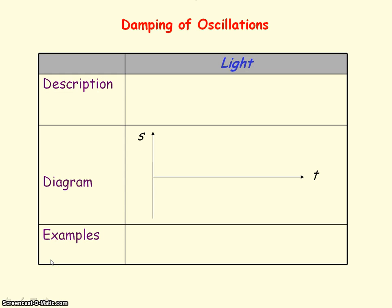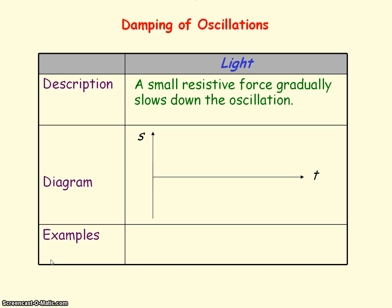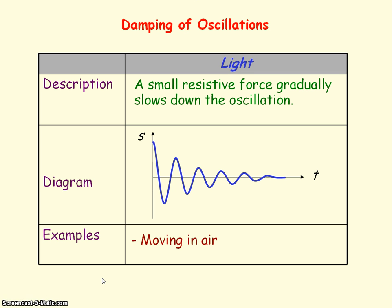Light damping is when a small resistive force acts on the oscillation to slowly reduce its amplitude to zero. An example would be an oscillation moving through air, so experiencing the resistive force of air resistance.